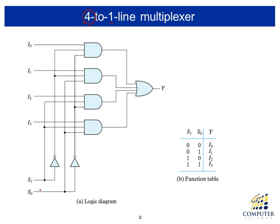In the four-by-one multiplexer, one of the inputs is directly connected to Y depending on the selection signal. If the selection signal is zero-zero, then input zero is directly connected to Y, which means if input zero is zero, output is zero; if input zero is one, then output is one.